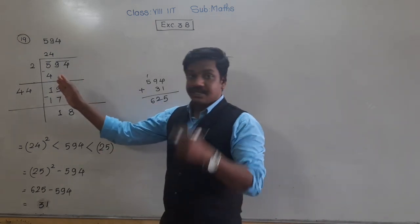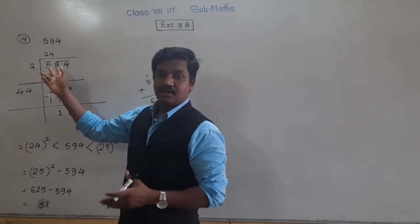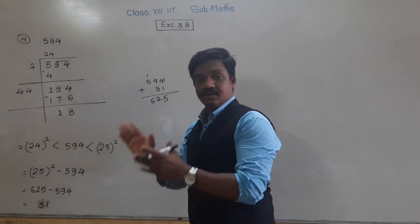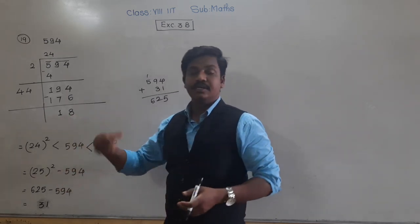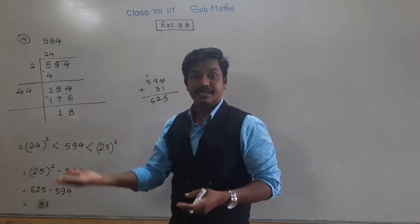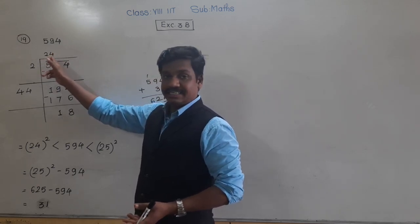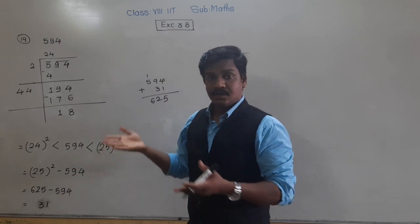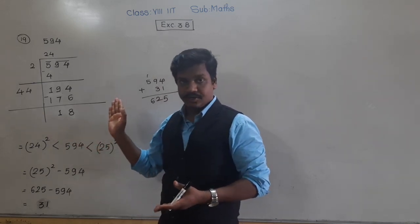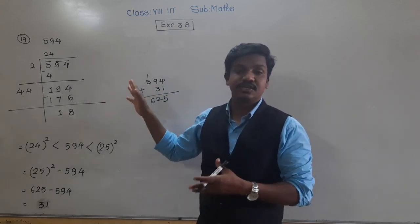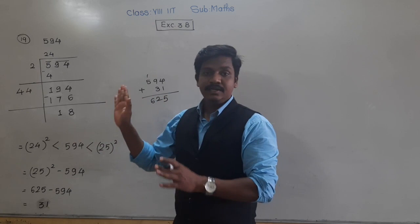Understood? Now let us think about why we used the long division method. We used it to determine which is the smaller perfect square than 594, so we could decide which is the nearest perfect square greater than 594. That is why we did this — and we found that the square of 24 is smaller than 594, so the greater perfect square is the square of 25.